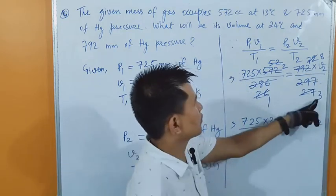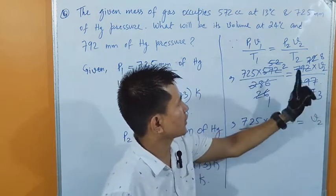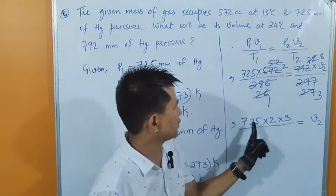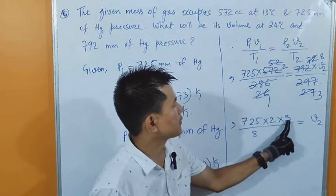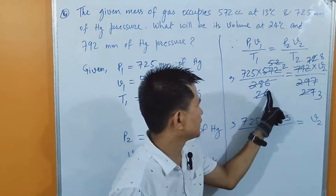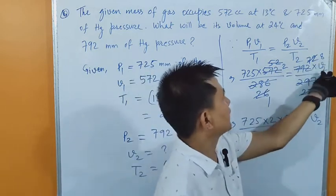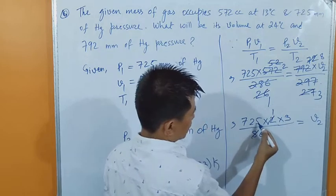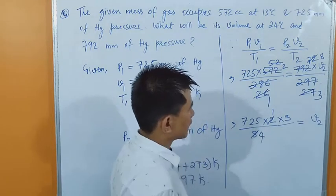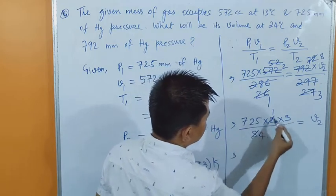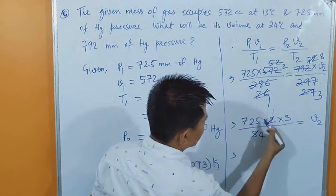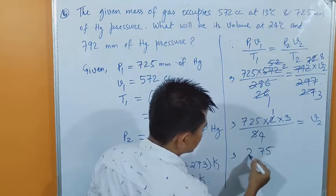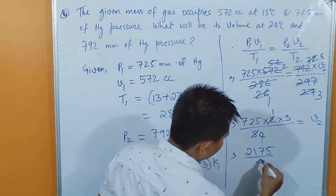By cross multiplication, we brought 3 to the numerator and 8 to the denominator. So we have 725 times 2 times 3 divided by 4 equals V2. Further cancellation: 2 divided by 4 gives a factor, leaving 725 times 3 divided by 4 in some form. Multiplying out the numerator gives 2175 divided by 4 equals V2.